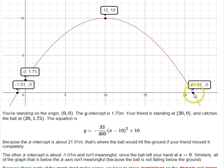Okay, now a few other points to notice. See this one over here, which is past the person standing. This would be where the ball would hit the ground if they missed. If they missed it completely, the ball would hit the ground here at about 21.